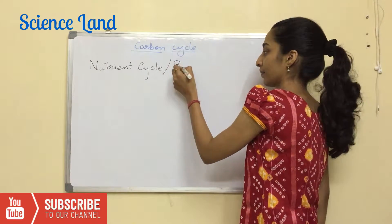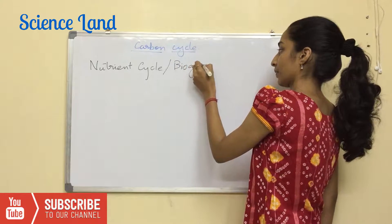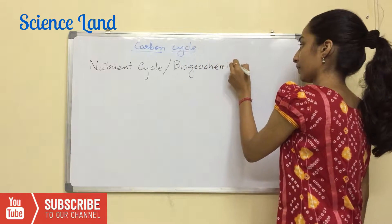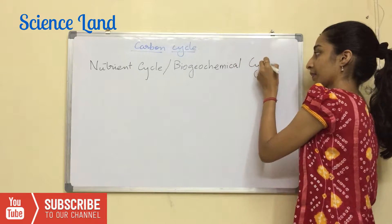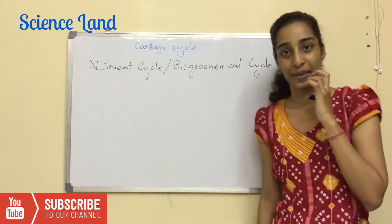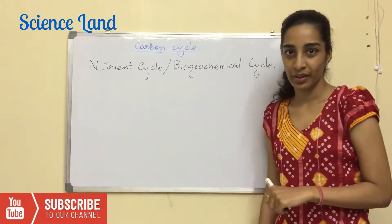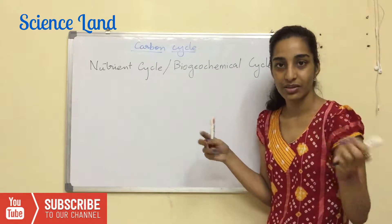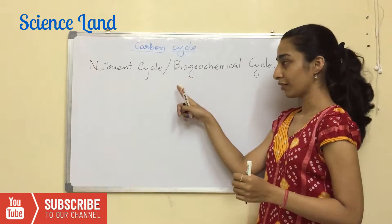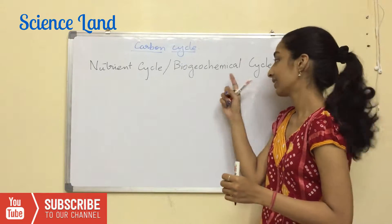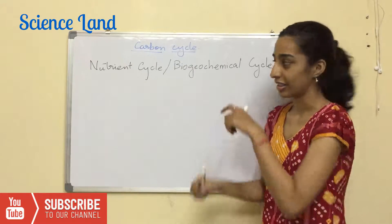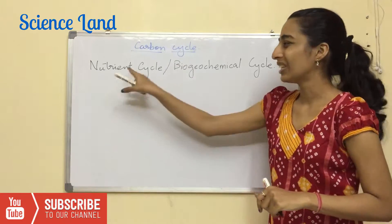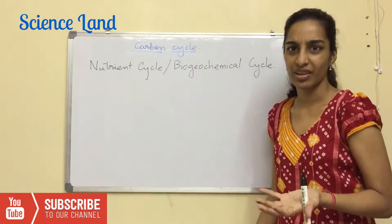Nutrient cycle is also known as biogeochemical cycle. This word is three words fused together: biological factors, geological factors, and chemical factors, which gives rise to the word biogeochemical cycle.